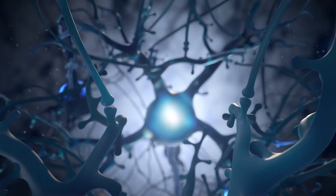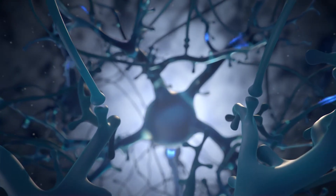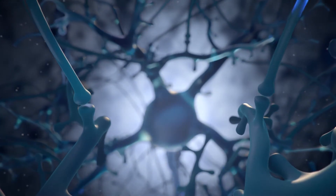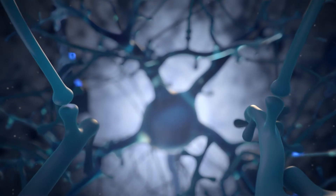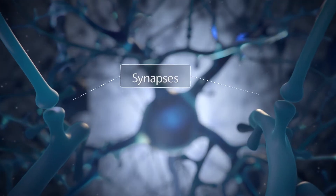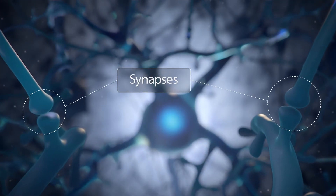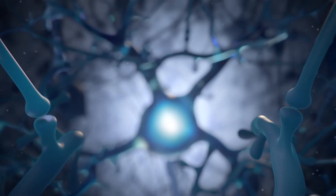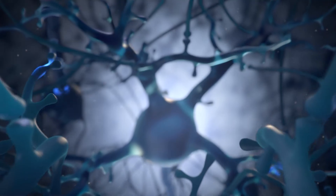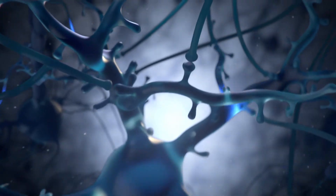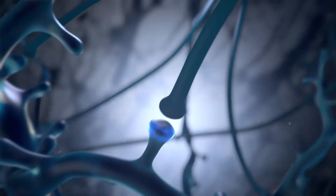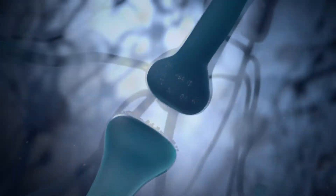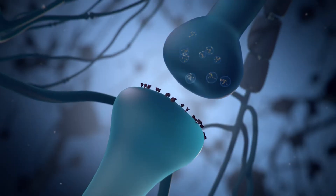The neurons of your brain connect to form a large network through axon-dendrite junctions called synapses. At these connection points, neurons communicate with each other using chemical signals called neurotransmitters.